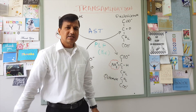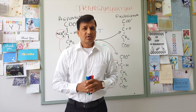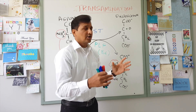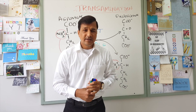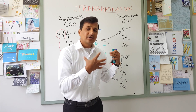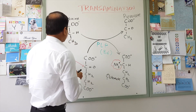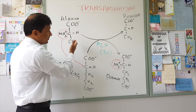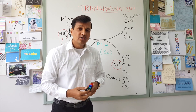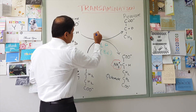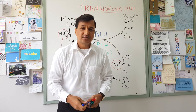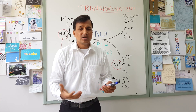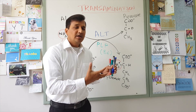Let me give another example of transamination — alanine transaminase, that is ALT. Instead of aspartate, let's take alanine. Alanine has an alpha carbon in the center, a carboxyl group, amino group, and a methyl group. For alanine to undergo transamination reaction, it needs an enzyme called ALT — alanine transaminase. This enzyme is specific for transamination of alanine, and it is found in the cytoplasm and mitochondria.